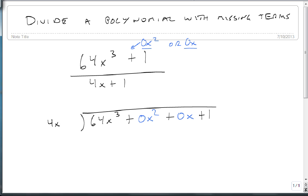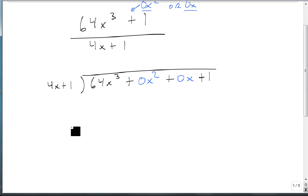So now we get 4x plus 1 going into that. And now that we've set this up, we can divide like normal. 64x cubed divided by 4x is 16x squared, which we then multiply through to get 64x cubed plus 16x squared, which we then come through and subtract. So make that positive, negative, negative. 64x cubed minus 64x cubed is zero.